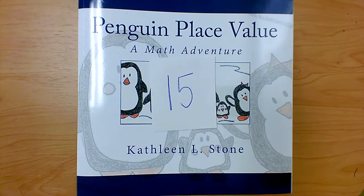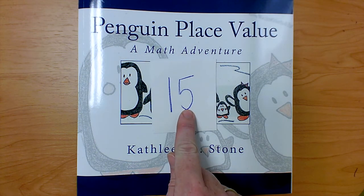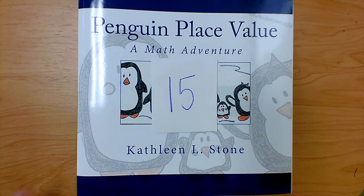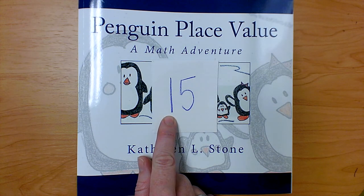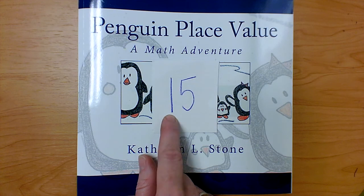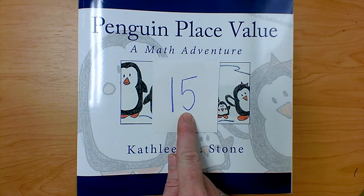This is the number fifteen. It has two digits. The first digit is a one. It is in the tens place. The last digit is a five. It is in the ones place.